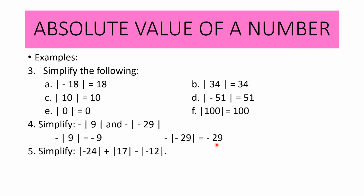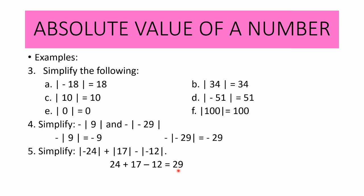For the last absolute value example, simplify: the absolute value of negative 24 plus the absolute value of 17 minus the absolute value of negative 12. First, get the absolute values: 24 plus 17 minus 12. According to the PEMDAS rule for addition and subtraction, whichever comes first, we add 24 and 17 to get 41, then subtract 12 to get 29. Therefore, the simplified form equals 29.